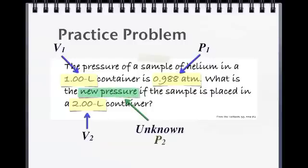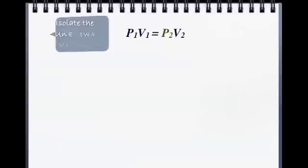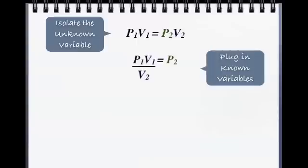These variables are then arranged into the previous formula of P1 times V1 equals P2 times V2. To solve, isolate the unknown variable, turning the equation into P1 times V1 divided by V2, which equals P2.